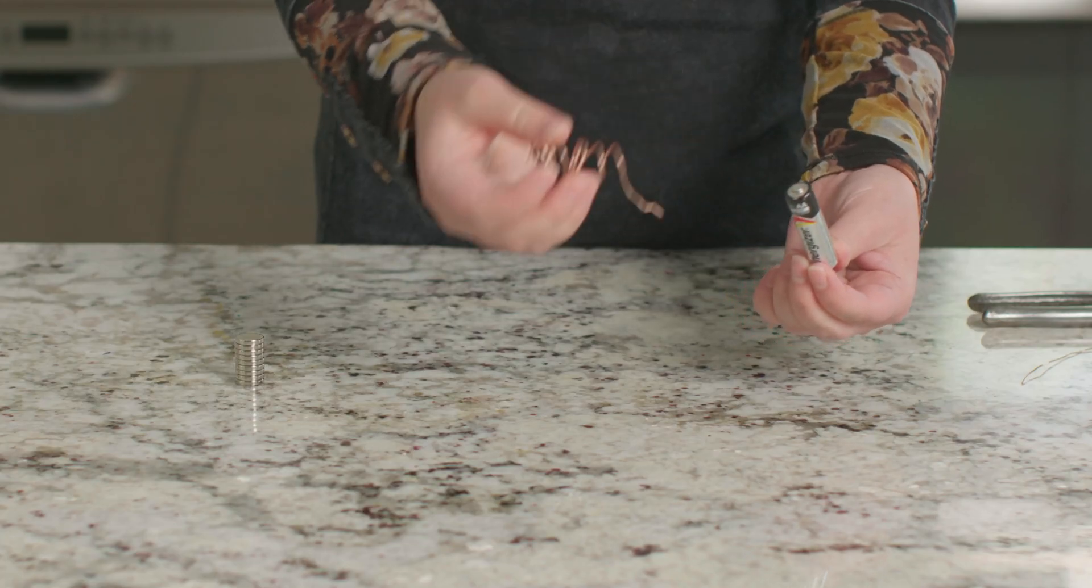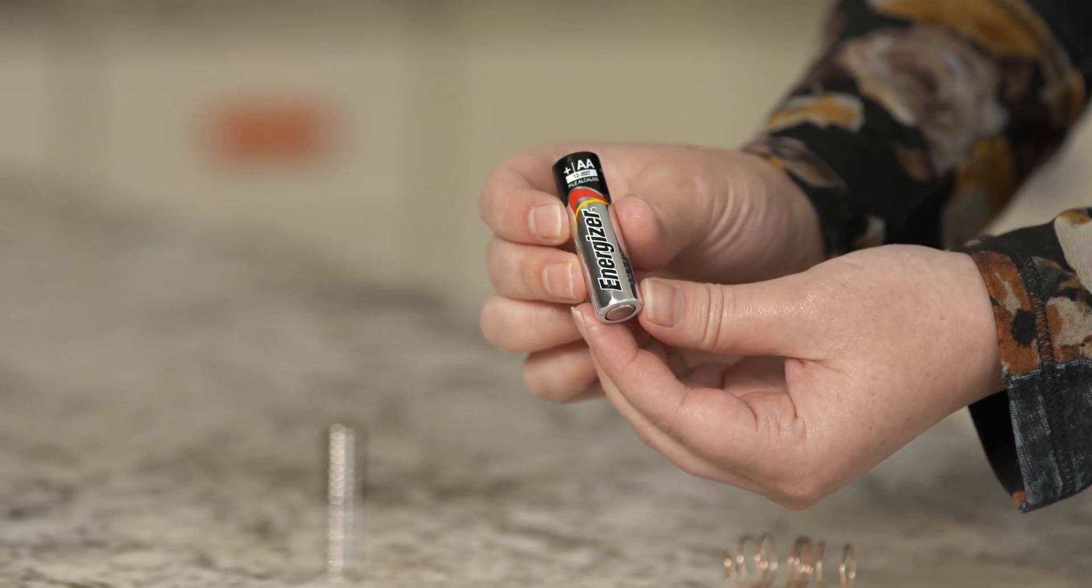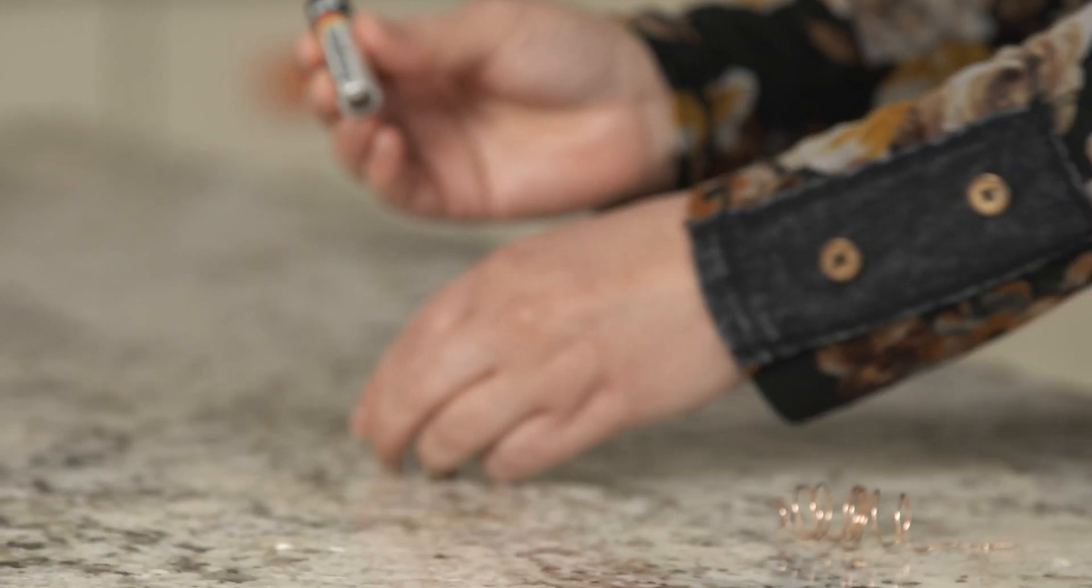Now, let's pull the wire off of our battery and then place the negative terminal of our battery on top of several neodymium magnets.